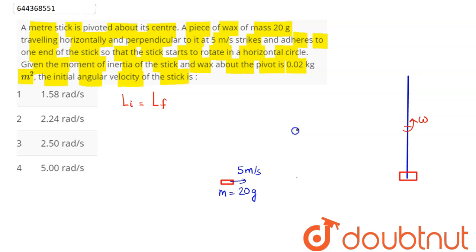Since it is a meter stick, the distance is 0.5 meters from one end to the center. This translatory particle will have angular momentum MVR: (20/1000) × 5 × 0.5. Since initially the rod was at rest, initial angular momentum of the rod is 0.